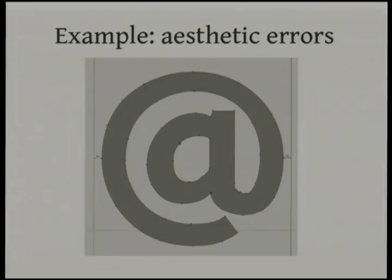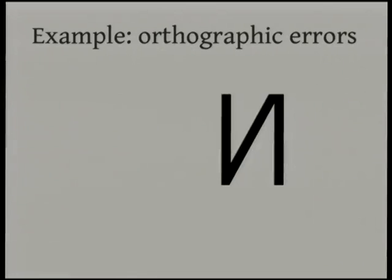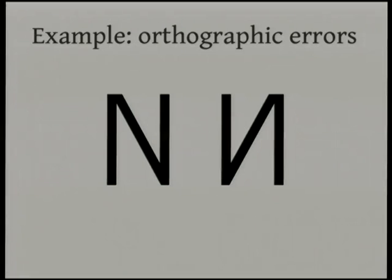Here's my example for an aesthetic error. This is an emboldened version of an at sign that I made in a skinnier version, and the emboldening process has sort of crunched things in places — the corner of the A is coming up real close to the circle, and that just needs help. An example of orthographic errors: the simplest I can think of is this character, which I as a native English speaker refer to as the 'Russian backwards N,' because it looks exactly like the N — at least in this font, News Cycle, which I created. But it's not actually correct, and I had people who read Russian tell me this.